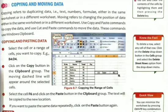For copying and pasting data: first, select the cell or a range of cells you want to copy. For example, B4 to D4 — we are going to copy the range B4 to D4, meaning we will copy all the data in that range. Now, click on the copy button in the clipboard group. The moving dashed line will appear around the selected cell.